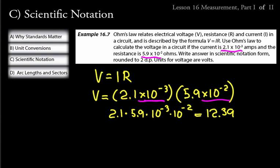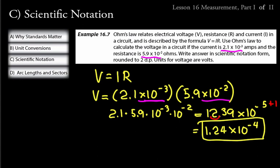We have 12.39 times 10 to the minus 5. But standard scientific notation requires the decimal to be right of the first non-zero digit, so we move it one place to the left and add plus 1 to the exponent. We get 1.239, which rounds to 1.24 times 10 to the minus 4. So the voltage is 1.24 times 10 to the minus 4 V.